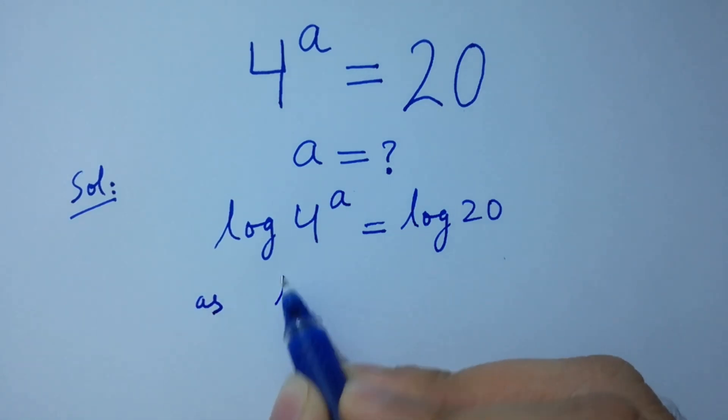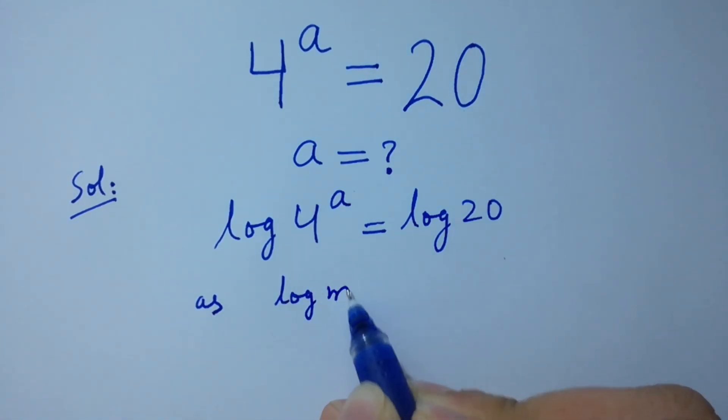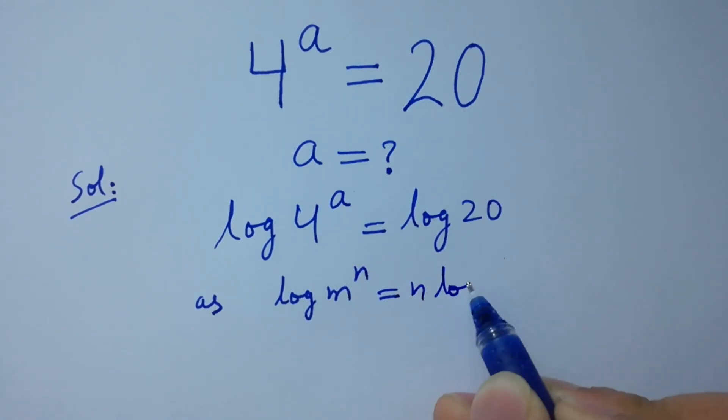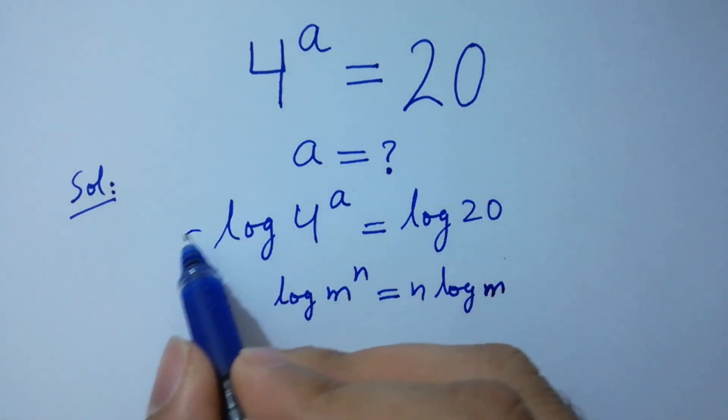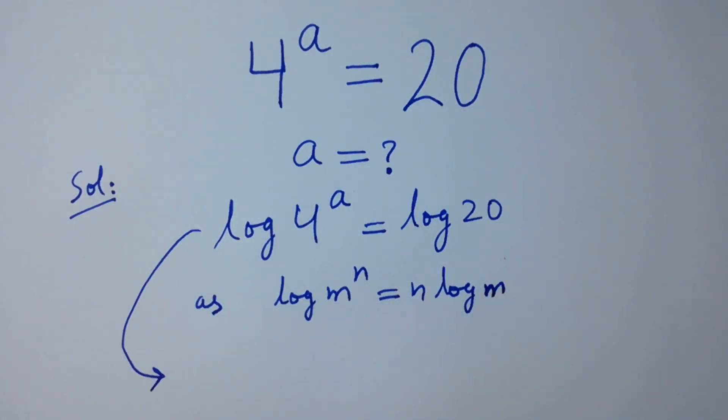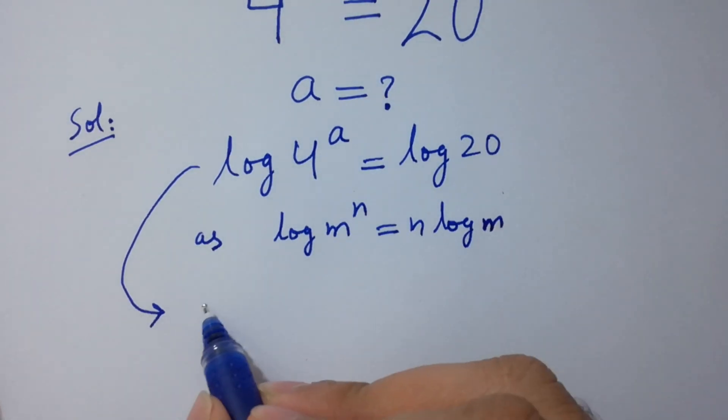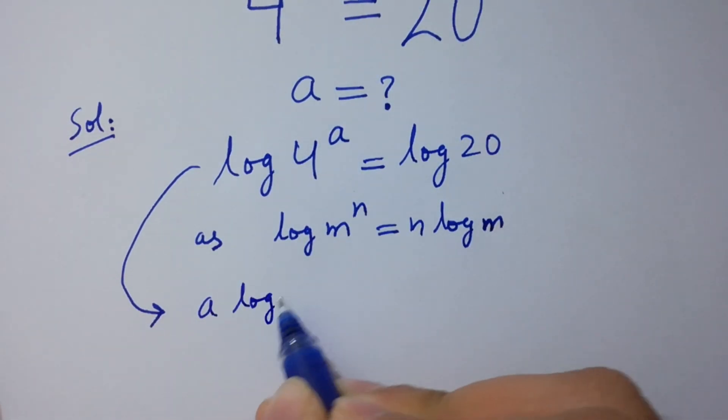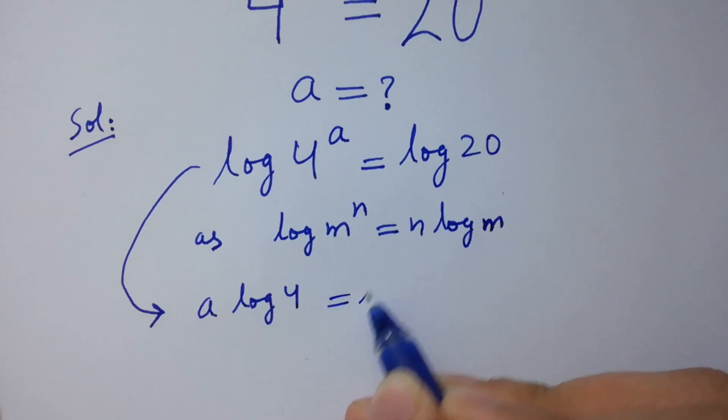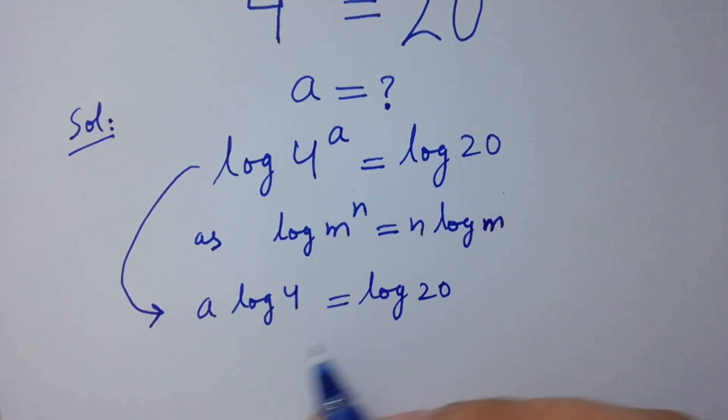As log m to the power n equals n log m, it will be a log 4 equals log 20. Divide by log 4 on both sides.